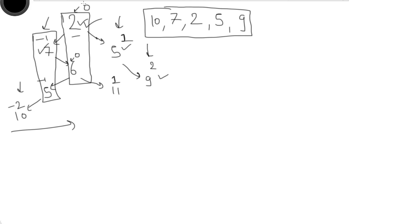In the binary tree node structure we have the node value, the left pointer, the right pointer, and we add one more property: height. At the start the height of all nodes is 0, and we will iterate from the root value.